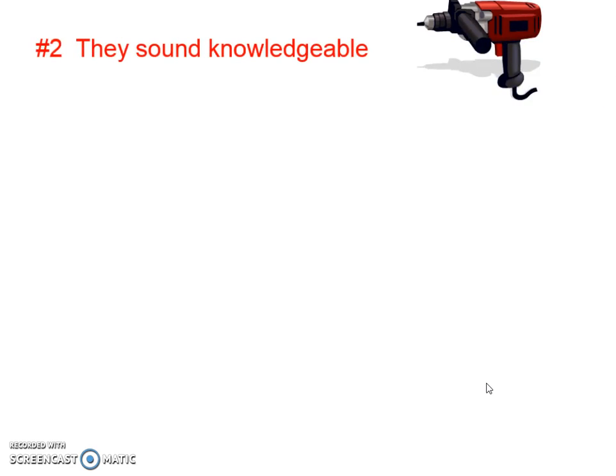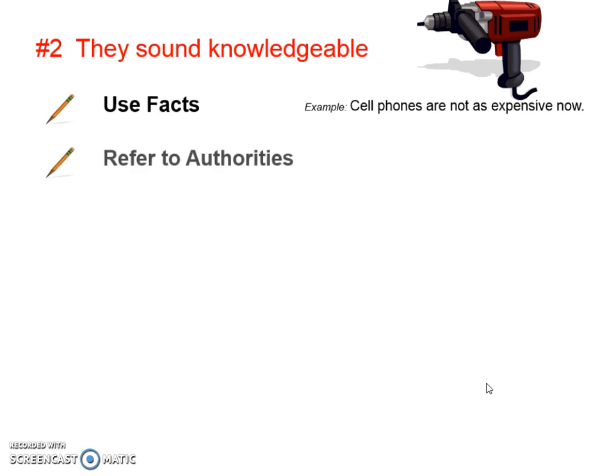A good rhetorician also sounds knowledgeable. You've got to have knowledge in order to argue. By using facts, you can prove that you've done research and that you have background knowledge — that you're prepared to consider all sides. Here's an example: 'Cell phones are not as expensive now.' If you're trying to talk your mom and dad into getting you a phone, that's really a fact — sometimes cell phones are not as expensive as they used to be.